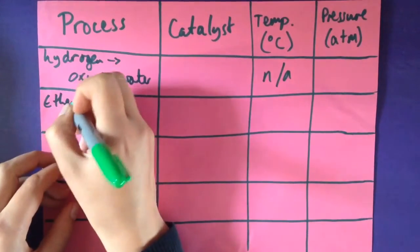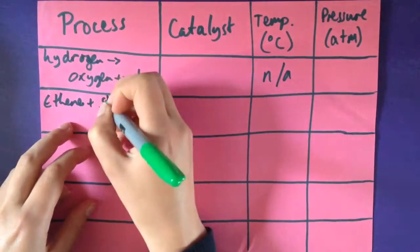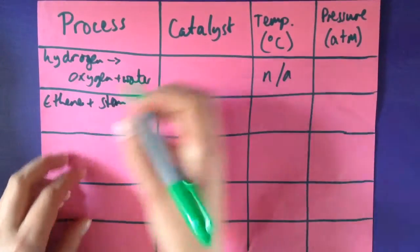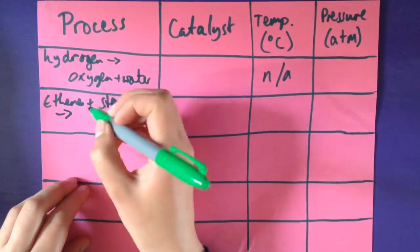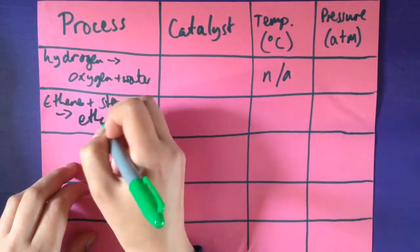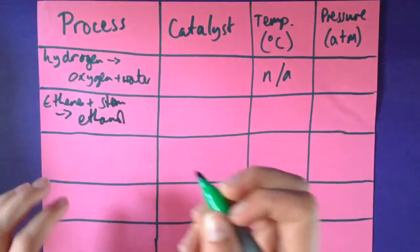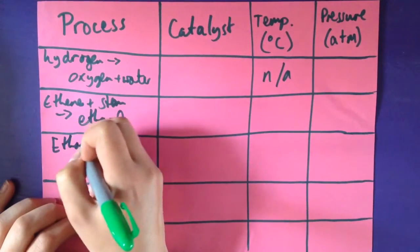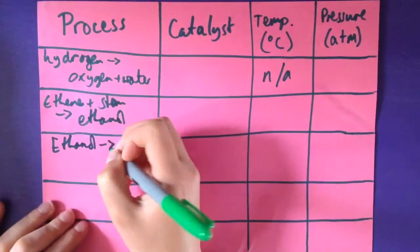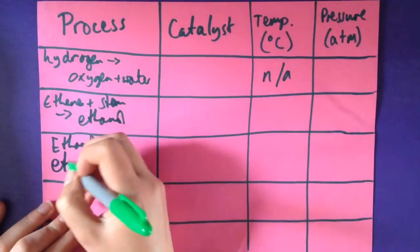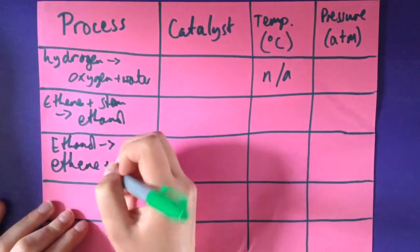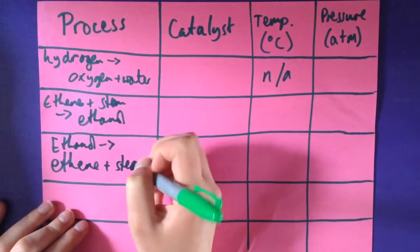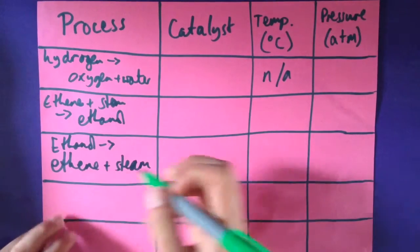Ethene and steam combining to make ethanol. Sorry about my handwriting.